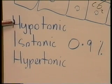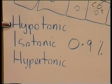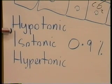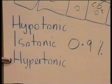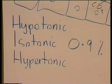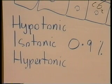A hypotonic solution has lower osmotic pressure than plasma. Isotonic has the same osmotic pressure as plasma. Hypertonic has higher osmotic pressure than plasma. For example, a 5% dextrose solution or a 5% saline solution would be a hypertonic solution, with greater osmolarity than the plasma.